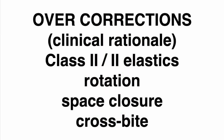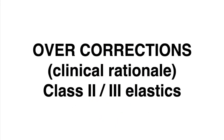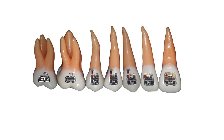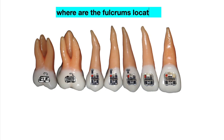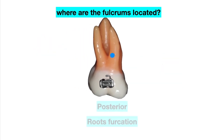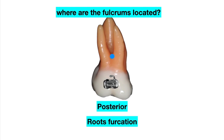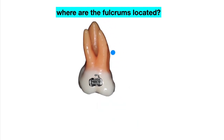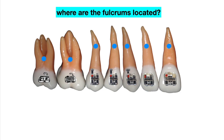I can create this counter moment here by several ways. Let's talk a little bit about class 2 and class 3 elastics. Let's suppose that I have here all of the crowns and roots, but the question is: where are the fulcrums exactly located? For posterior teeth, I can find the fulcrums at the furcation.